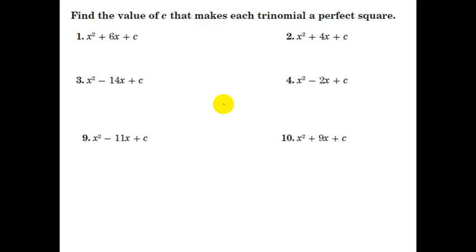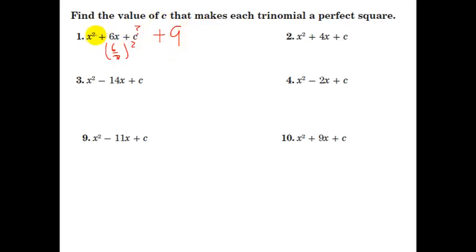Let's get straight to some examples where we can see what this looks like. The first ones just say find the c value that makes a perfect square. What number would need to go here? We take half the middle number: 6 over 2, and then square it — so this would be plus 9. And of course if we add plus 9, we also need to do minus 9. So now this part is a perfect square and this part is left over.